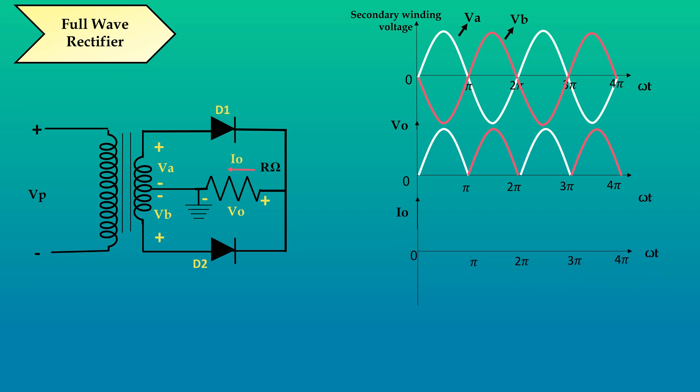The load current will be equal to V0 divided by R. The average output voltage, V average or Vdc is equal to 2 Vm divided by pi. And the RMS value of output voltage Vrms is equal to Vm by root 2. If you have any doubts, let me know in the comment section below.